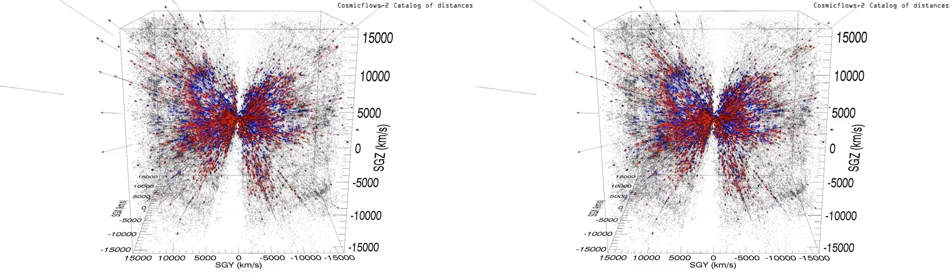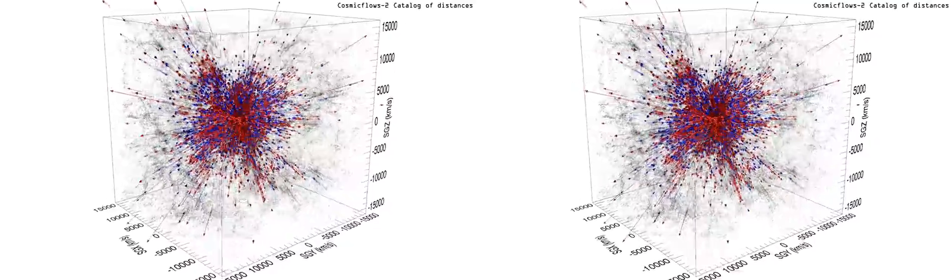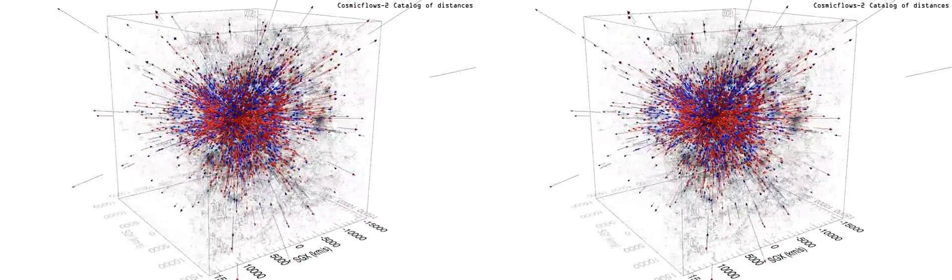Cosmic flows' two peculiar velocity measurements are superimposed during this half rotation. Gravitational peculiar motions towards us are in blue and motions away are in red.